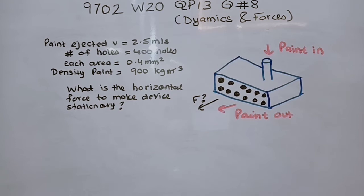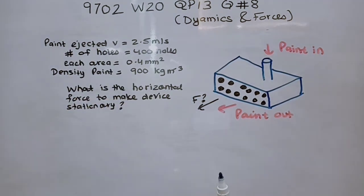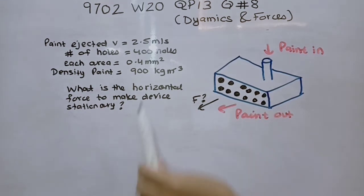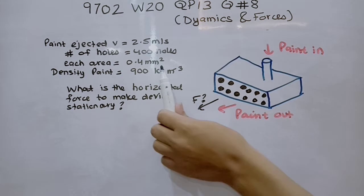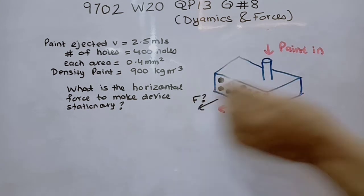It says that the paint is ejected at a speed of 2.5 meters per second. The number of holes this structure has are 400. Each area of the hole is 0.4 millimeter square and the density of the paint is 900 kg per meter cube.